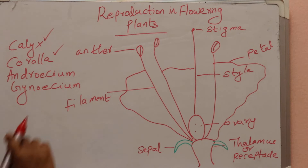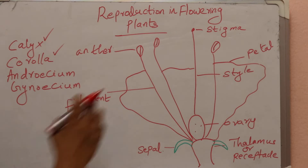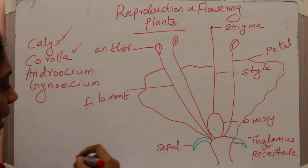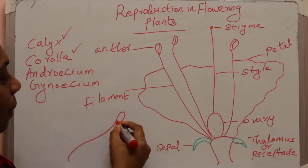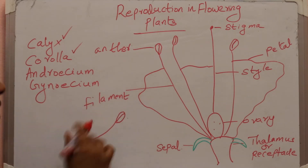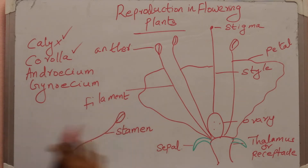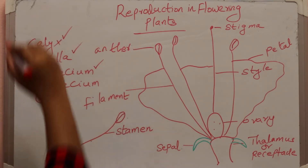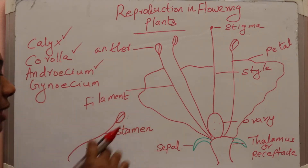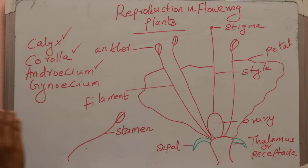The androecium is the male reproductive part of the flower. It consists of the filament with a bi-lobed structure at the top called anther. This unit is called a stamen, and all the stamens collectively are called androecium.